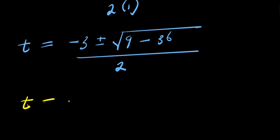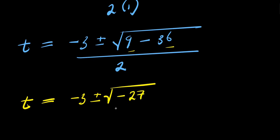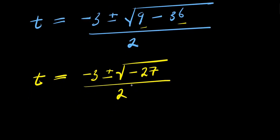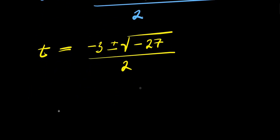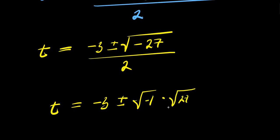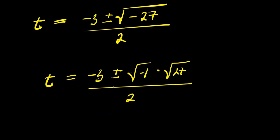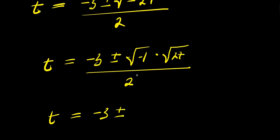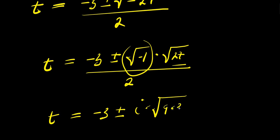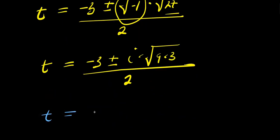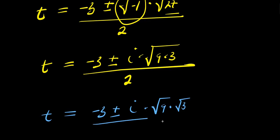So from here we have t equals negative 3 plus or minus square root of negative 27, divided by 2. We can write this as negative 3 plus or minus square root of negative 1 times square root of 27, divided by 2. Since square root of negative 1 is i, and square root of 27 equals square root of 9 times 3, which is 3 root 3, we get t equals negative 3 plus or minus i times 3 root 3, divided by 2.